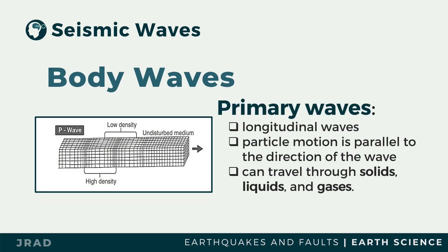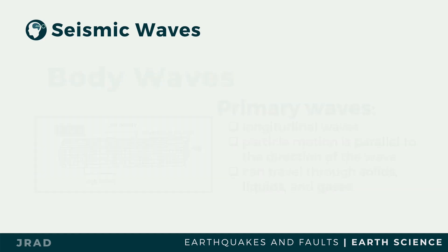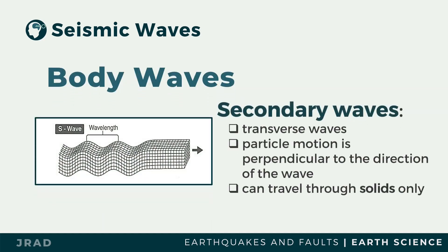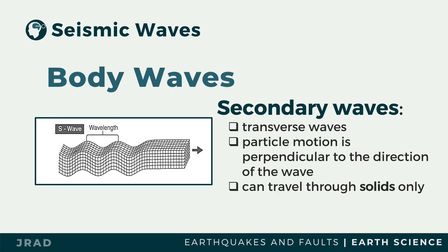Primary waves are longitudinal waves where particle motion is parallel to the direction of the wave. They can travel through solids, liquids, and gases, but travel fastest in solids. On the other hand, secondary waves are transverse waves where the direction of particle motion is perpendicular to the direction of the wave. Secondary waves can only travel through solid materials.